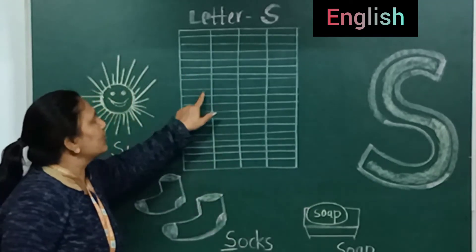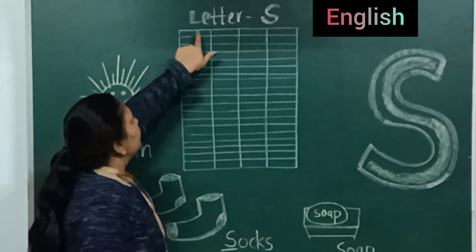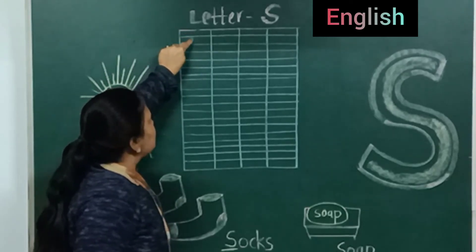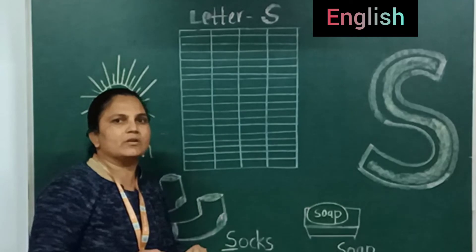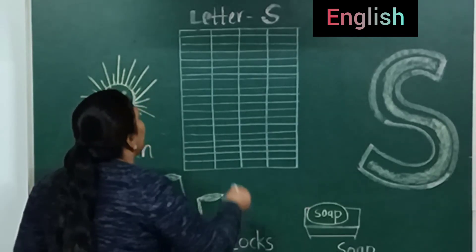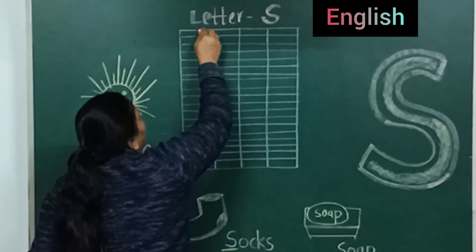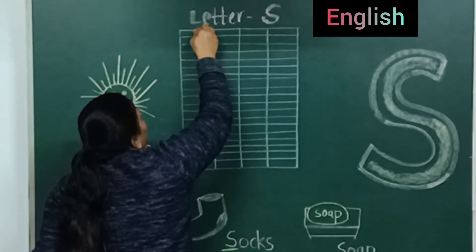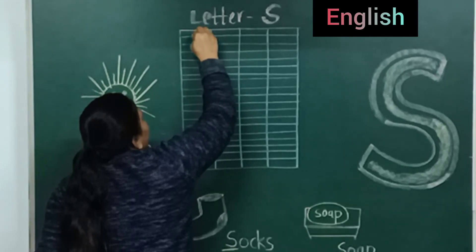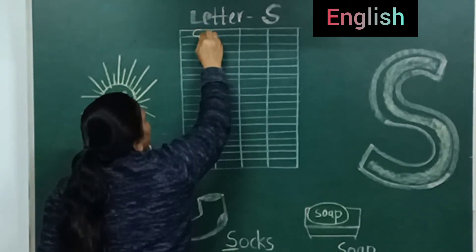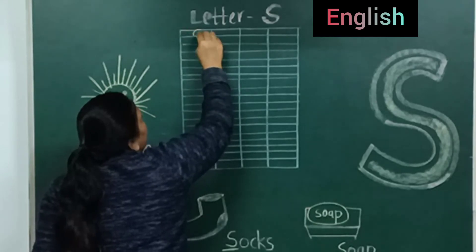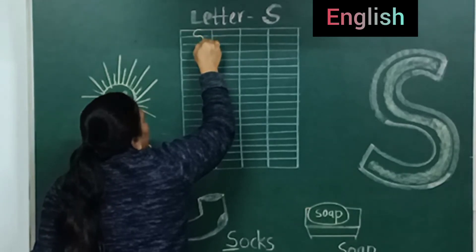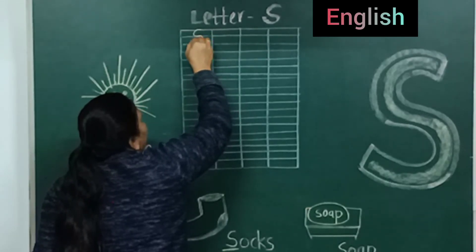Now we will start the writing part on this page. Look here. This is the red line. This is the first blue line. And this is the second blue line. First, put your pencil on the red line. And then we will make a curve like C, till the first blue line.